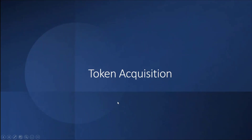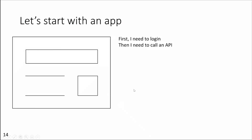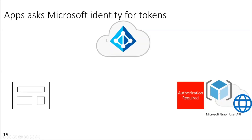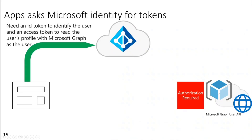Let's understand how token acquisition happens in Microsoft Identity Platform. Starting with an app — we need to log in a user and then call an API on behalf of the user. This is my application, this is the Microsoft Identity Platform or the AD server, and this is the Microsoft Graph API user ME endpoint from where I'll get the user's profile information. This application needs an ID token to identify the user and an access token to read the user's profile from the API on behalf of the user.